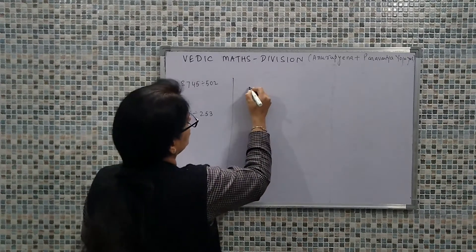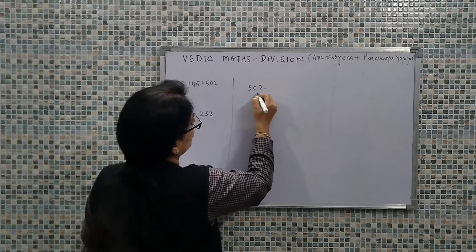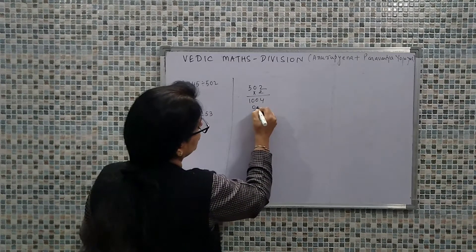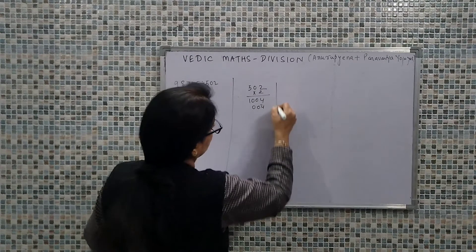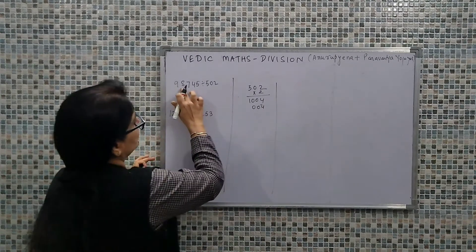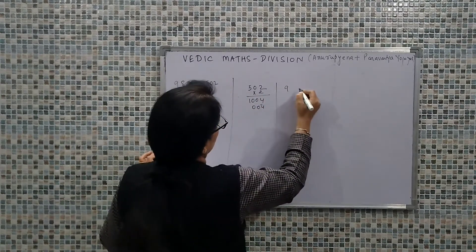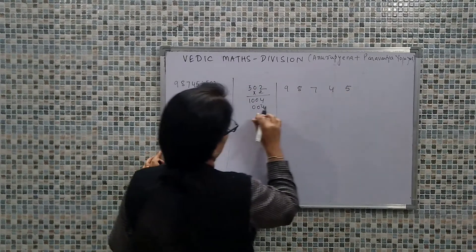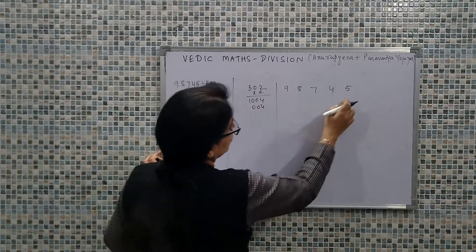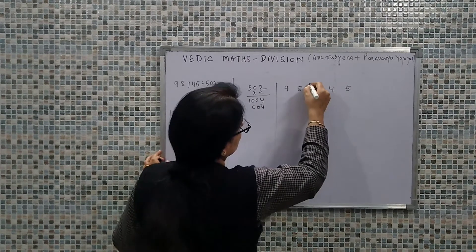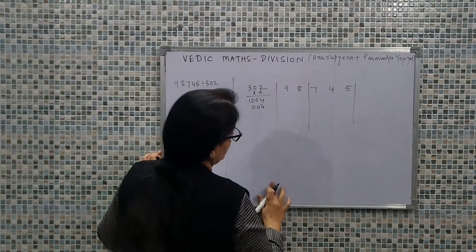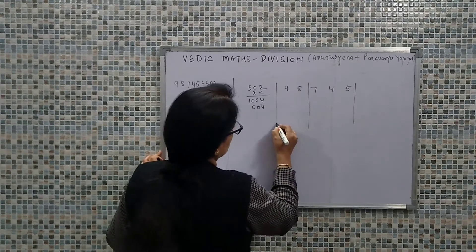So we have written here 502 into 2, which is 1004. Paravartya Yojiyat gives us 004. Now our dividend is 98745. How many places are there? 1, 2, 3. So 1, 2, and 3 - this is our partition. Now we start with the division.